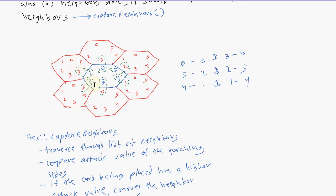This information is useful because, for example, if this is the 0th neighbor, then you want to compare the 0th attack value of this hex to the 3rd attack value of that hex. And if this is the 5th neighbor, you want to compare the 5th attack value of this to the 2nd attack value of that. I hope that makes sense.